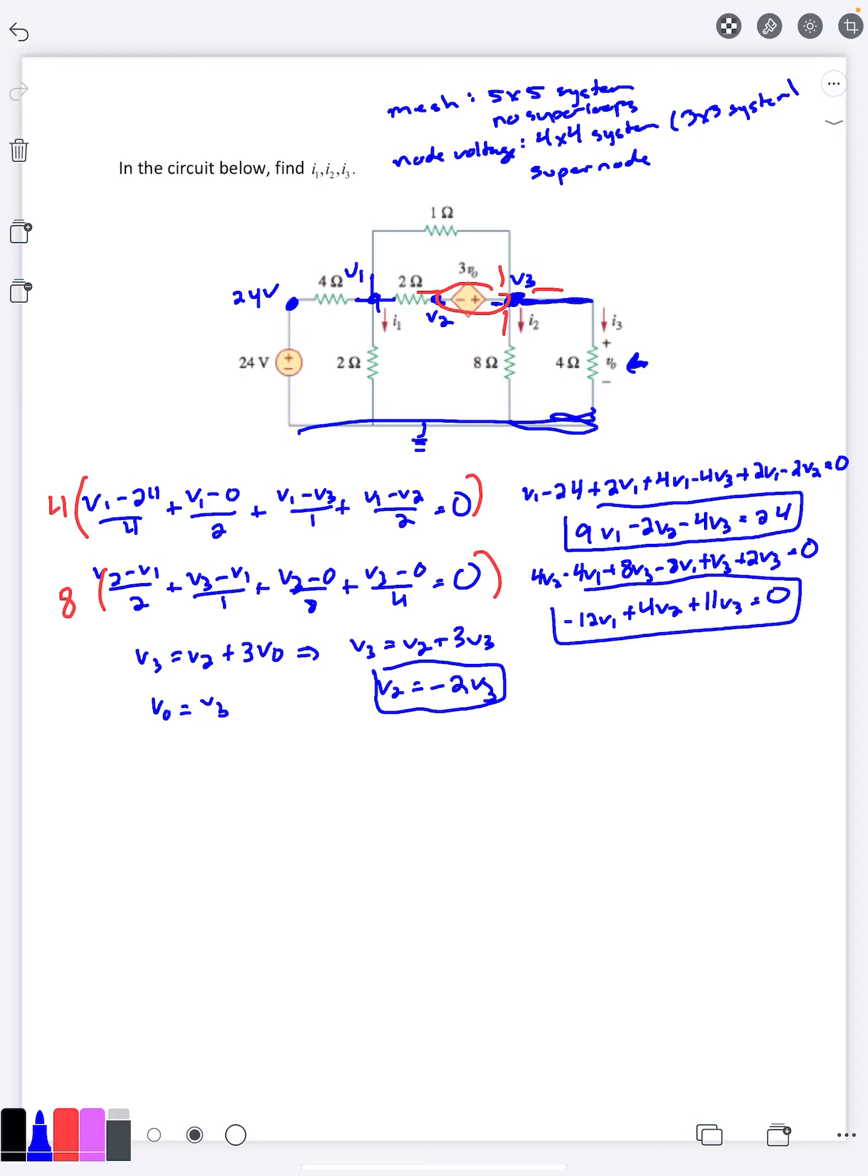I'll go ahead and first replace what v2 is. v2 is negative 2v3. And then minus 12v1, let's realize this is 9v1 here, minus 12v1 plus 4 times negative 2v3 plus 11v3 is 0. And this simplifies down to 9v1 plus 4 minus 4, looks like that actually cancels out there and it's 24. And then the second one is going to be negative 12v1 plus 3v3 is 0.